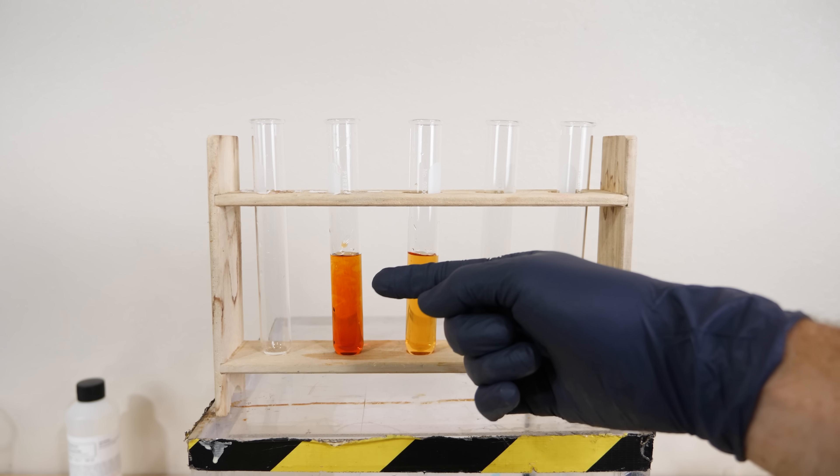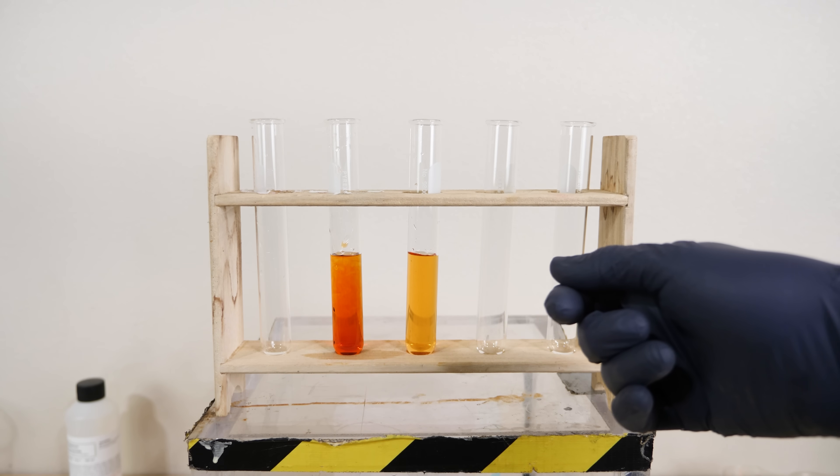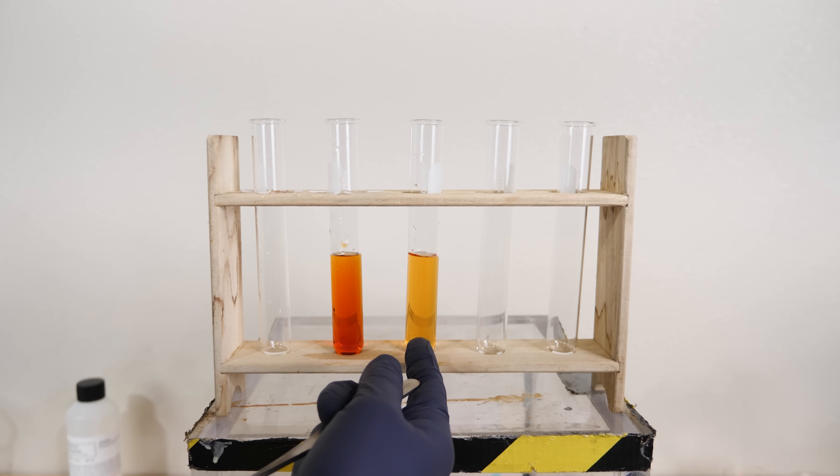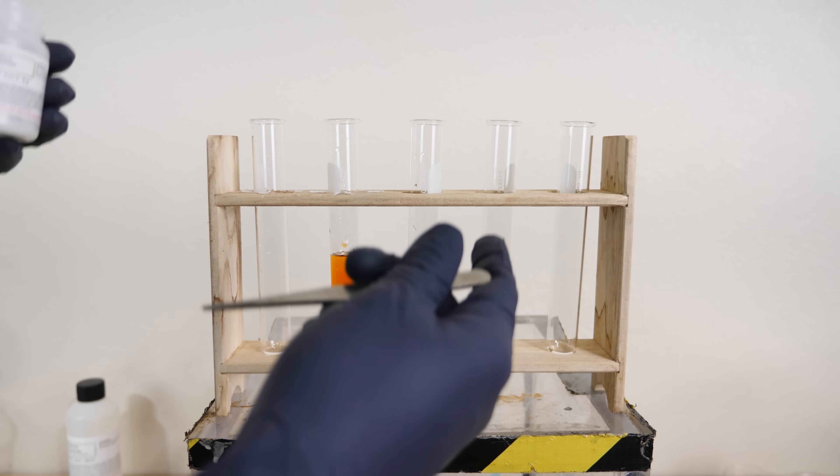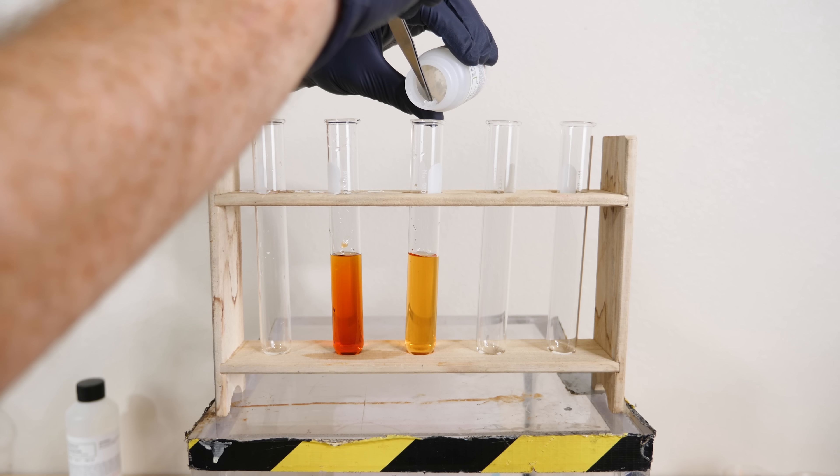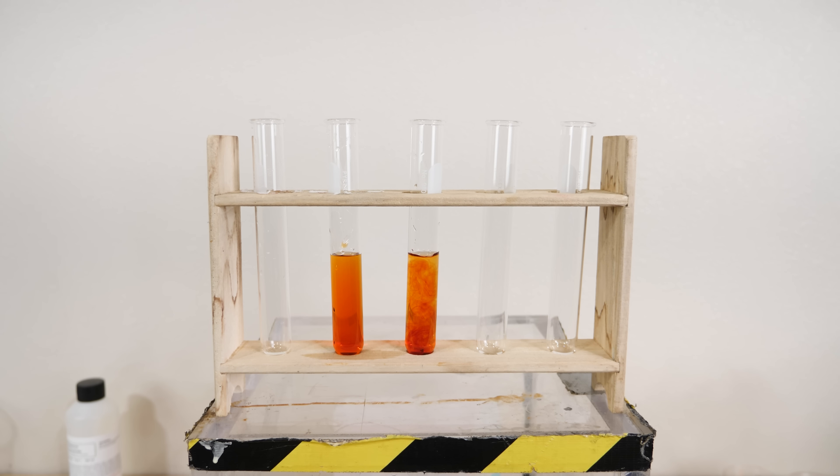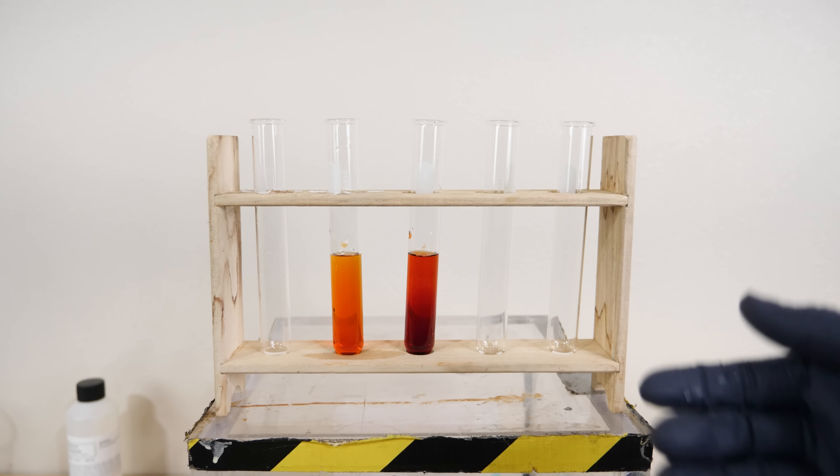So this would lead you to believe that maybe the iron got all used up, and so we had to add more of it for the products to occur. But we have the same solution here. So in this one, I'll just add some more thiocyanate to it because we assumed that the iron got all used up. So here's a crystal of thiocyanate. And we can see that this turns it red too. So you can see that whether I added iron or thiocyanate, we got more of the products.